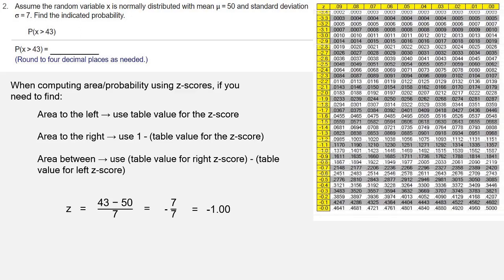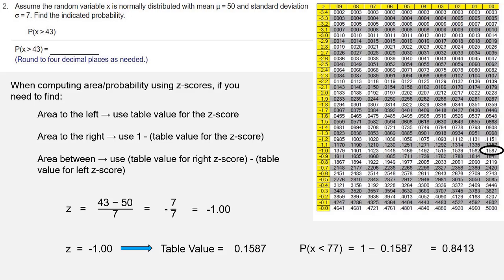Since we have a negative z-score, we need the negative side of the standard normal distribution table. The table value for negative 1.0 is 0.1587. Now to compute the area, because this is a greater than area, that's area to the right, we need 1 minus the table value. That's 1 minus 0.1587, which is 0.8413. That's your answer.